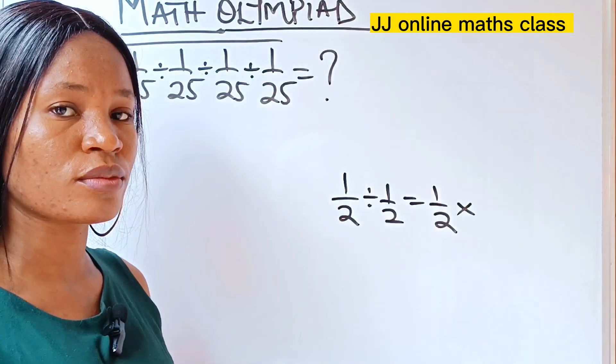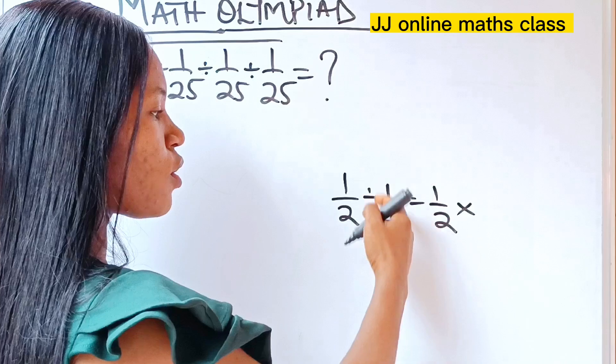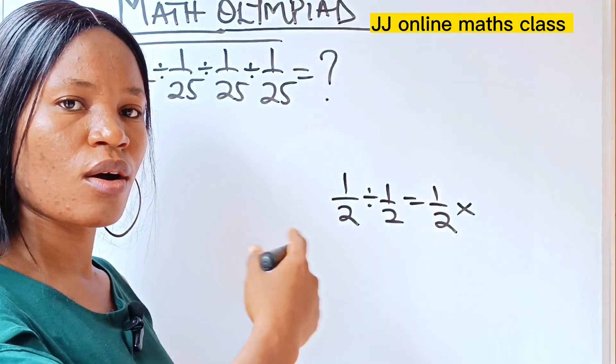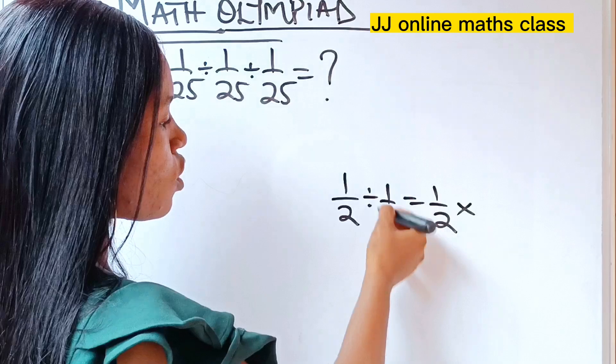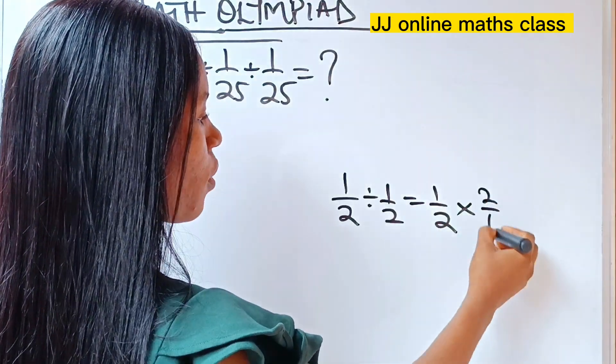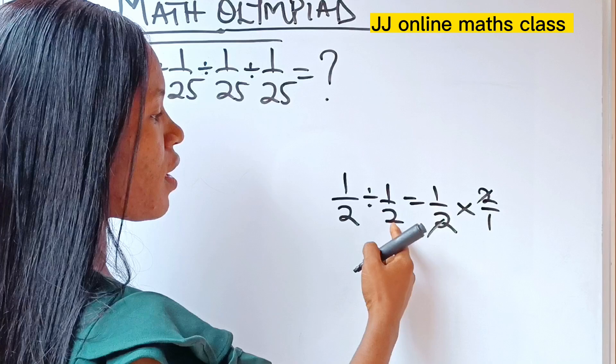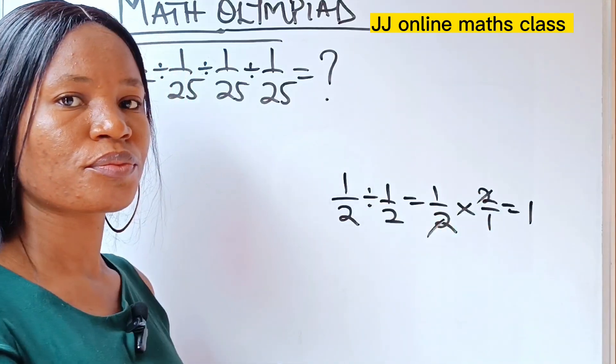If you change your division to multiplication, you are going to take the inverse of the other number. So it's going to be times 2 over 1. That means 1 over 2 divided by 1 over 2 will give you 1, all right?